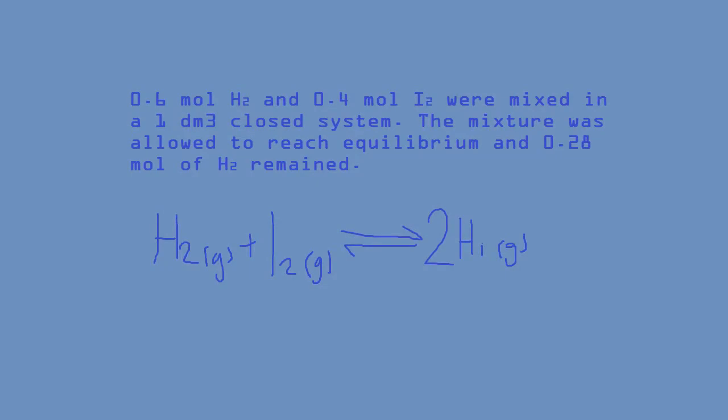Take this as a working example for the second type of calculation you're likely to come upon. 0.6 moles of hydrogen and 0.4 moles of iodine were mixed in a 1 decimetre cubed closed system. This mixture was allowed to reach equilibrium and 0.28 moles of hydrogen remained. Note here the equilibrium formula.